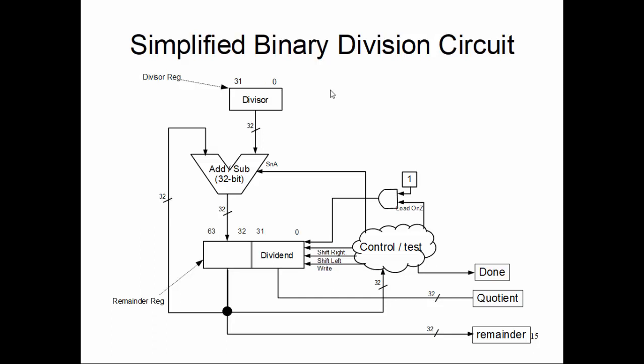What we'll do again: keep the divisor at one place and then dividend we will keep at the lower half of the 64-bit register. Now this 64-bit register should have something like the multiplication area we did, partially load the upper half with the 32-bit result of the adder subtractor.